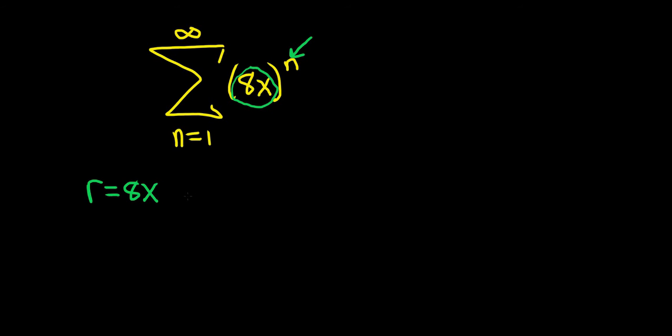The geometric series test says that this series will converge if the absolute value of r is less than 1. So we take r, which is 8x, and set it less than 1 because the test says our series will converge in this case.